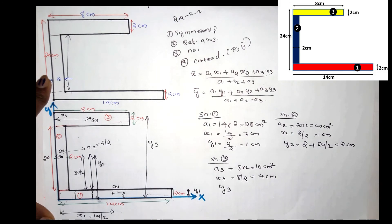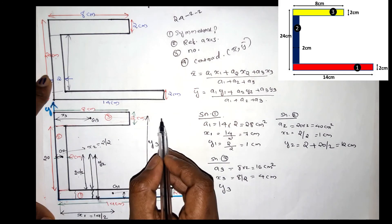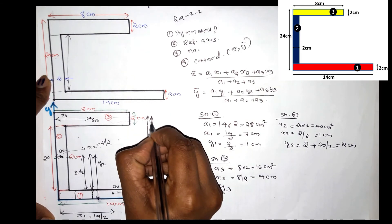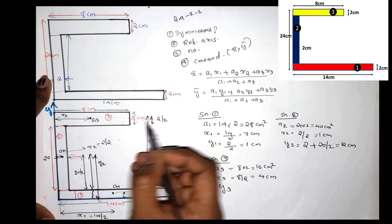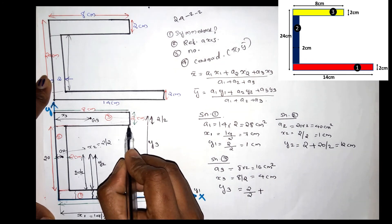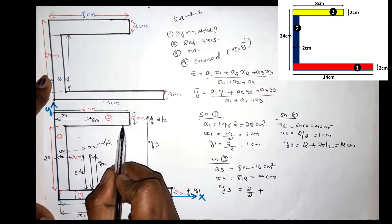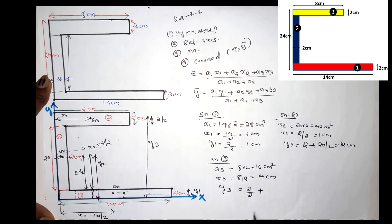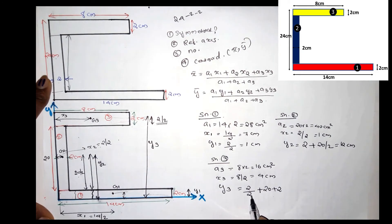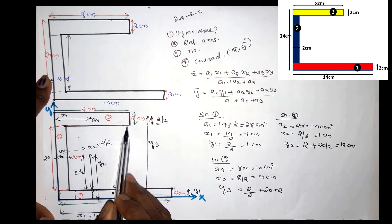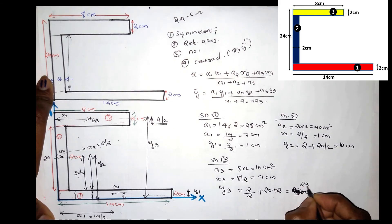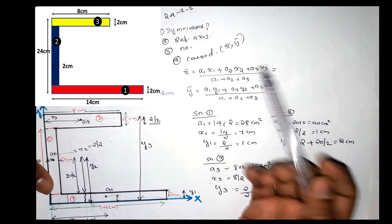For y3, the distance from the x axis is 2 plus 2 plus the half of the third rectangle, giving 23 cm. Now we have x̄ and ȳ with x1, x2, y1, y2 values ready to substitute into the equation.